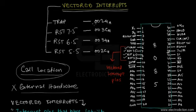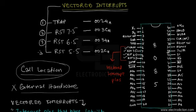For the pins Trap, RST 7.5, 6.5, and 5.5, the corresponding memory call locations are shown here. Trap is directed to location 0024H, and so on for the RST pins. Trap has the highest priority, so if simultaneous interrupt requests fall on all pins, priority goes to Trap, then RST 7.5, then 6.5, and finally 5.5 — decreasing in order from top to bottom.